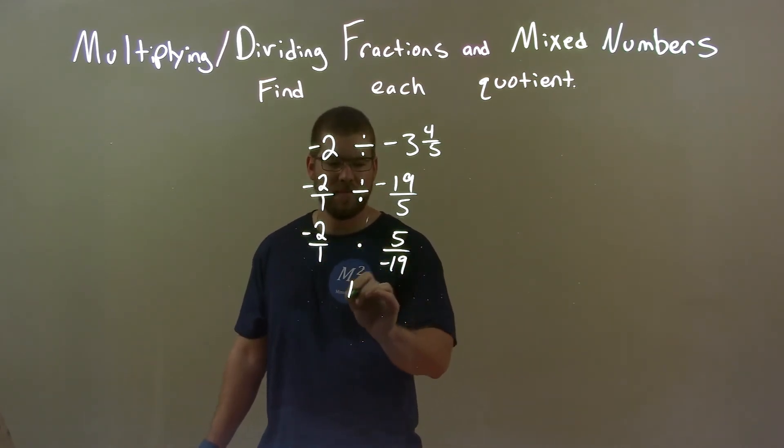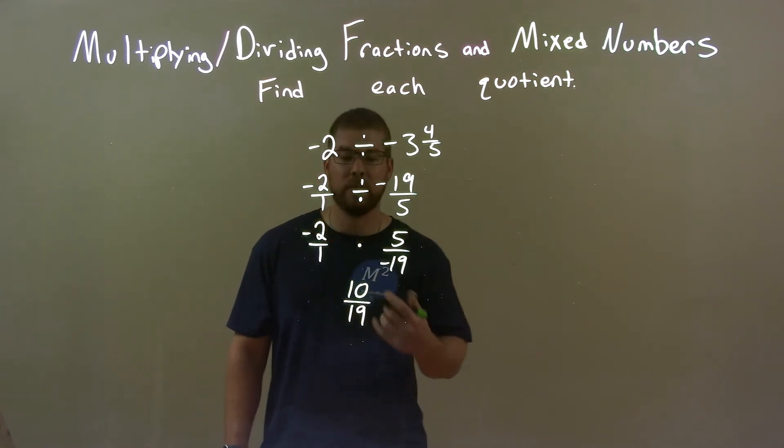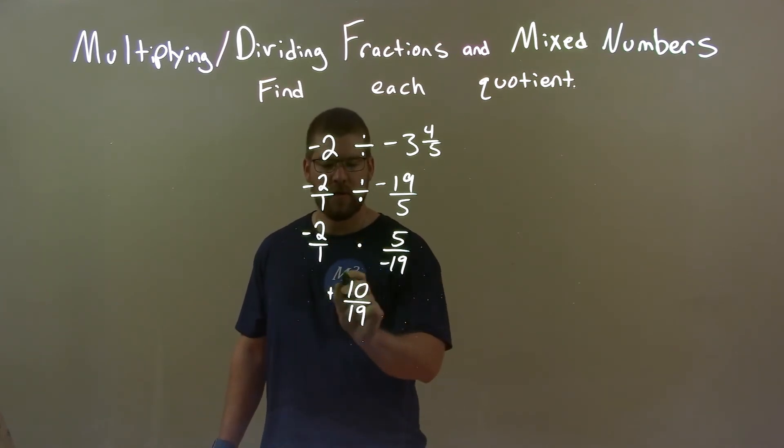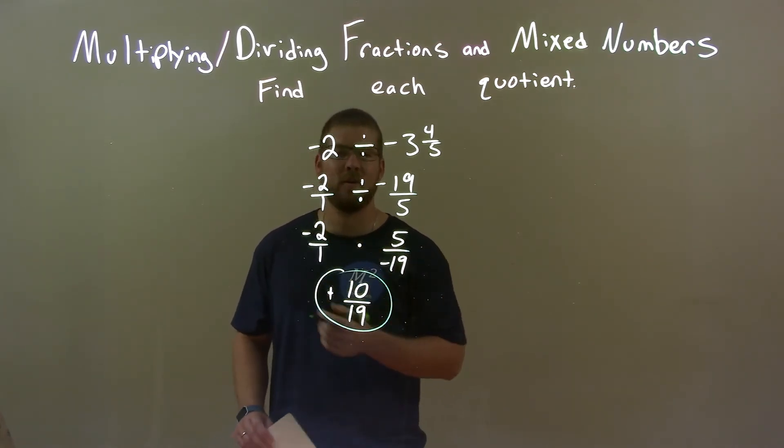2 times 5 is 10 and 1 times 19 is 19. Negative times a negative overall is going to be a positive. So our final answer is just positive 10 over 19.